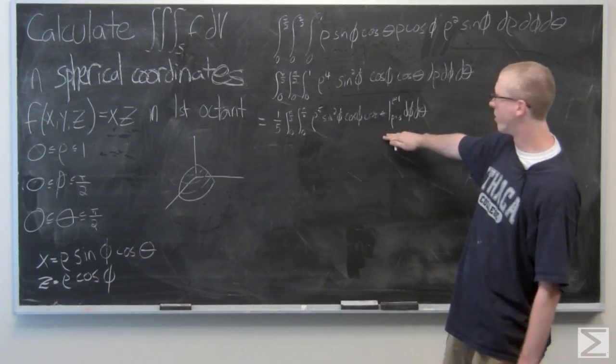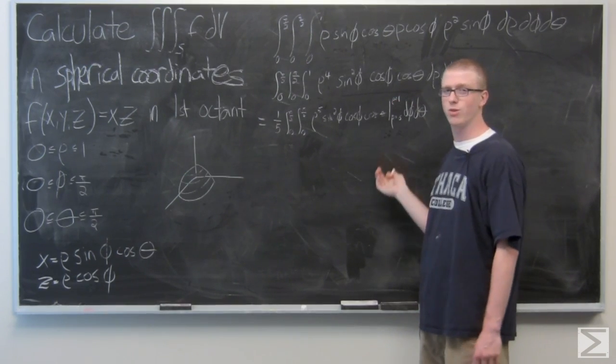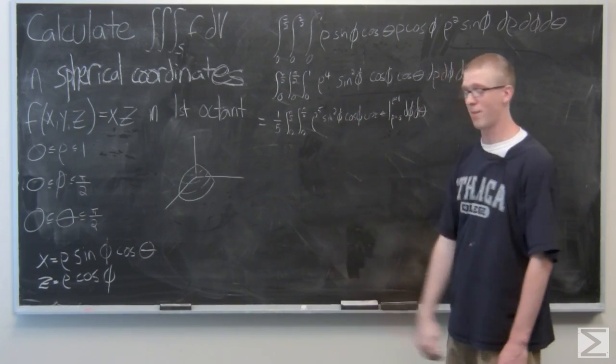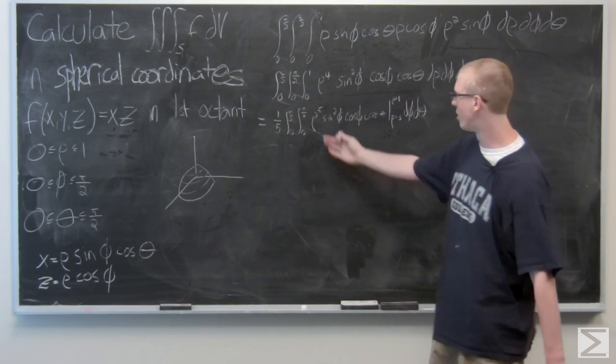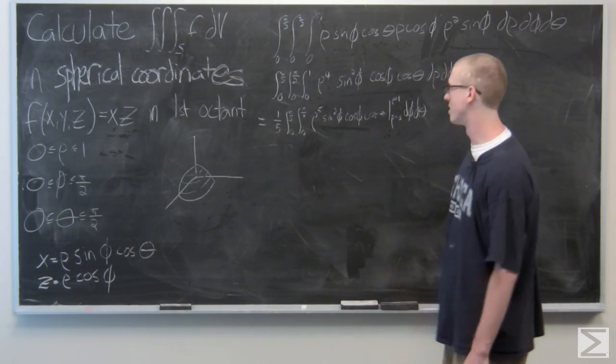So we're evaluating rho from 0 to 1. For rho equals 0, all this is just going to drop out and become 0. For rho equals 1, we're just going to be left with what's inside here.